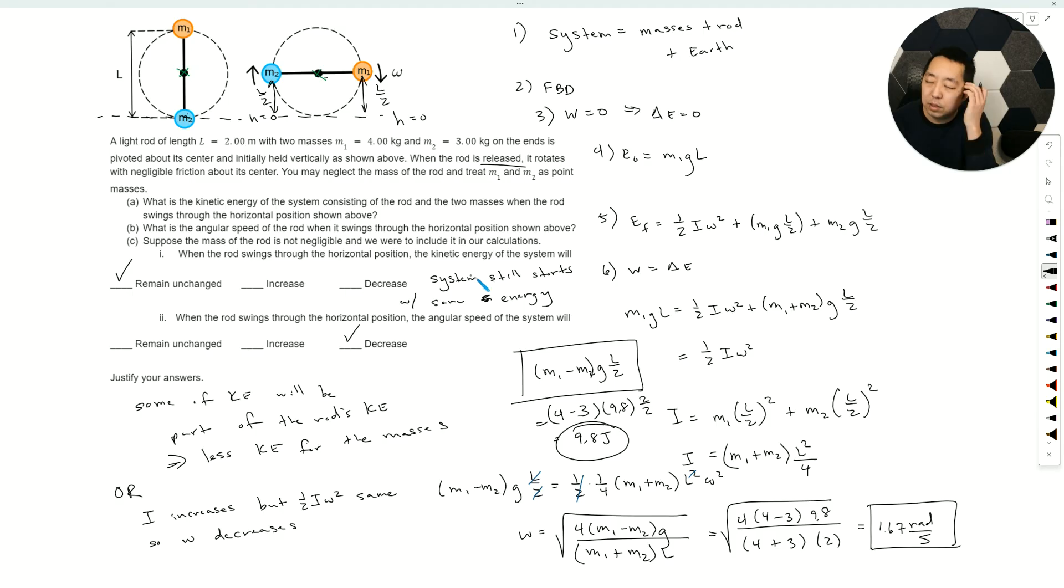Now, there's a slight tricky part when you're saying the same energy. Technically, there's some potential energy from the mass of the rod itself here, but it has the same potential energy later—it's located at L over 2 for the rod. So there's no change in the potential energy of the rod, technically. But I think I would still just state it like that.